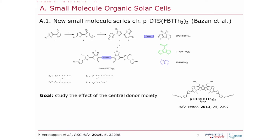In the first part of the talk, I want to focus on small molecule organic solar cells. We made a small series of molecules inspired by a small molecule from the Bazan group called T1, which was published a few years ago and gives quite high efficiencies. We made related molecules in which we exchanged the central donor moiety — which in the Bazan molecule is a dithianosilo — by three different core moieties: the cyclopentadithiophene, the dithianopyral, and thienothiophene. The goal was to study the effect of the central donor moiety on material characteristics and the final solar cells.